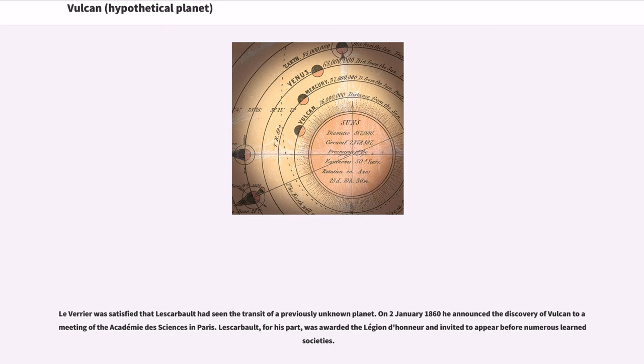Le Verrier was satisfied that Lascarbalt had seen the transit of a previously unknown planet. On January 2, 1860 he announced the discovery of Vulcan to a meeting of the Académie des Sciences in Paris. Lascarbalt, for his part, was awarded the Legion d'honneur and invited to appear before numerous learned societies.